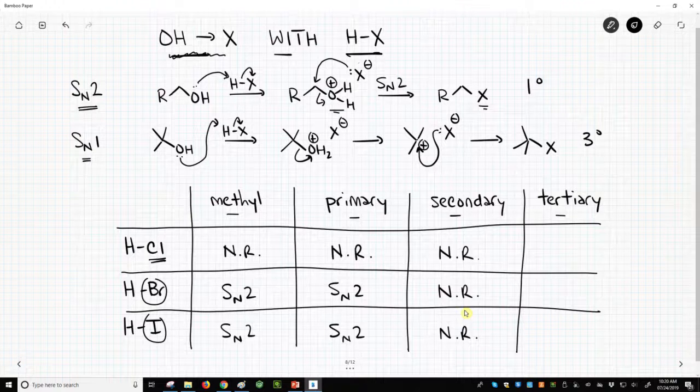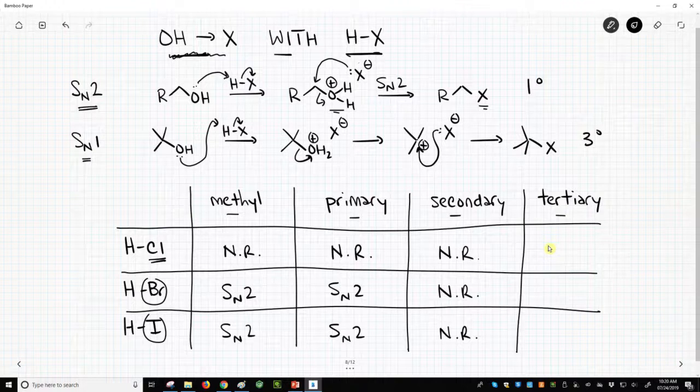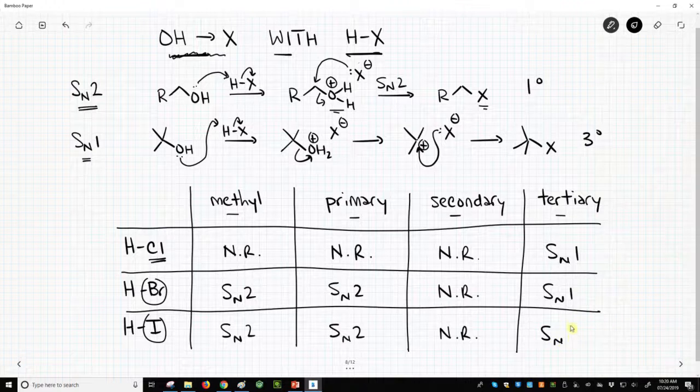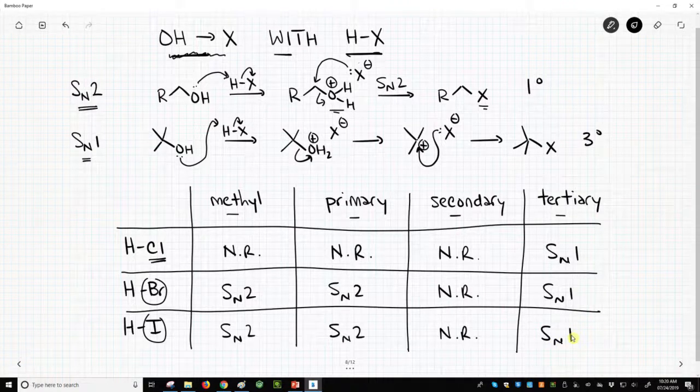Once you get to a tertiary alcohol, all of these acids can cause the generation of carbocations. So all of these will happen, and the halide will attack the carbocation that you form. The same across the board.